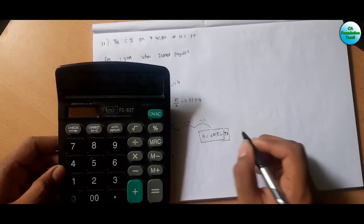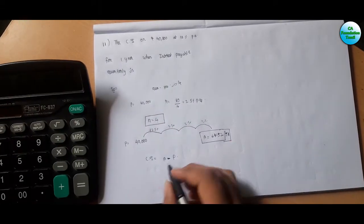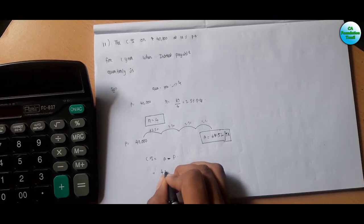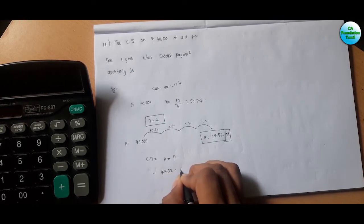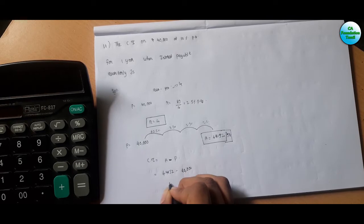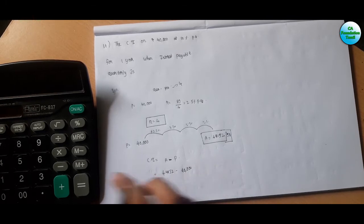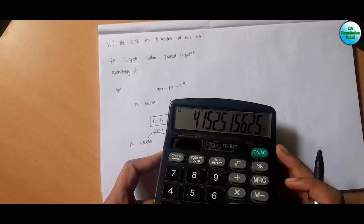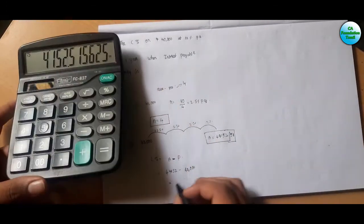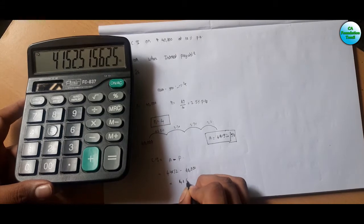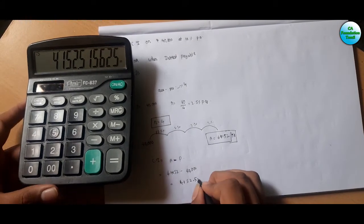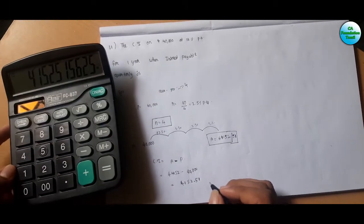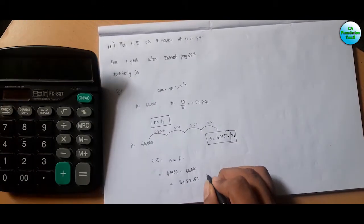So this is the final amount: 44,152.51. This is the interest: 44,152 minus 40,000. So the value is 4,152.51. So 4,152.51 — something like this.